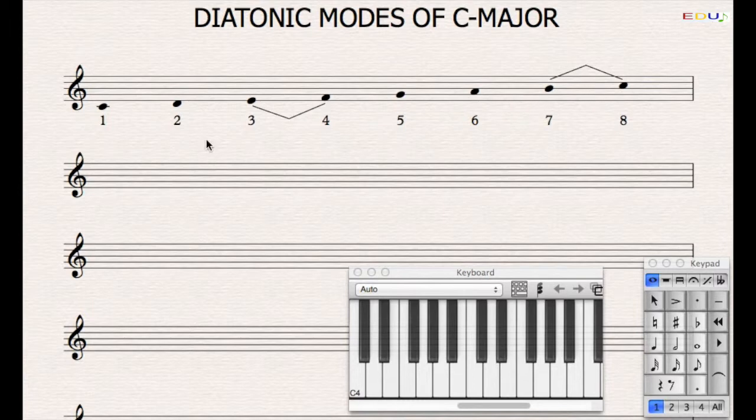We see that in a C major scale we get the semitone steps between 3 and 4 and 7 and 8. So far we called this scale the C major scale.